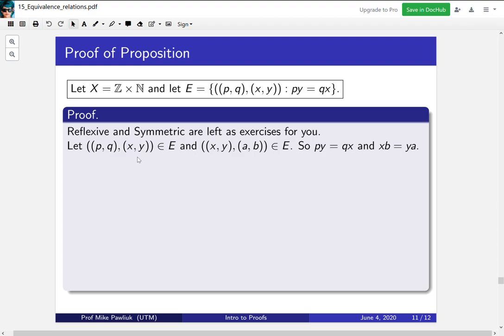The first one tells us that py is equal to qx, and the second one tells us that xb is equal to ya. You should check this if it's not clear to you. This is saying first times fourth is equal to second times third. So check that when you plug in these ones, you get this.